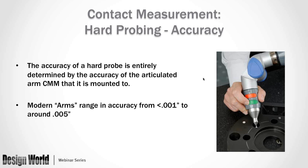Let's talk about hard probe accuracy — a big benefit of hard probing. Because it's the simplest kind of probe, with no moving parts and no electronics, it won't add any inaccuracy to the arm. It will completely rely on whatever machine you're using — the accuracy and precision stated for that device. Modern arms range from less than one thou — a thousandth of an inch — to about five, sometimes as high as ten thousandths.